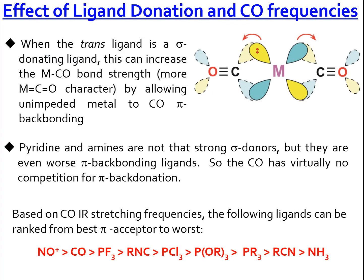The nature of ligand L trans to carbonyl affects the bond M-carbonyl and therefore affects the bond inside the carbonyl. Suppose we have pyridine or amines trans to CO. Pyridine and amines are not strong sigma donors and at the same time they are not good π back bonding ligands. So in this case, CO has virtually no competition for the π back donation with pyridine and amines.